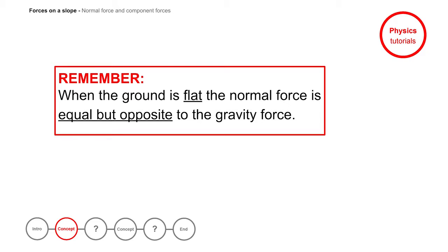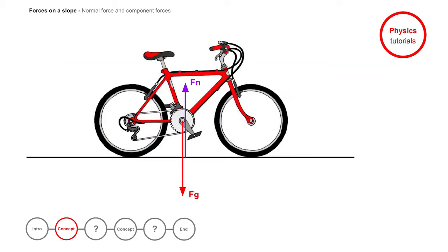When the ground is flat, the normal force is equal but opposite to the gravity force. The gravity force is cancelled out by the normal force. In other words, the vertical resultant force is zero.